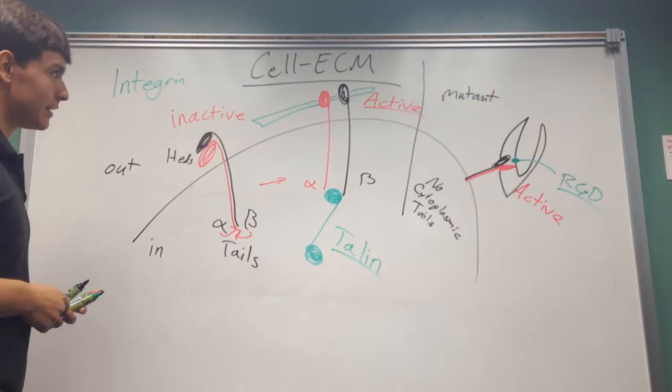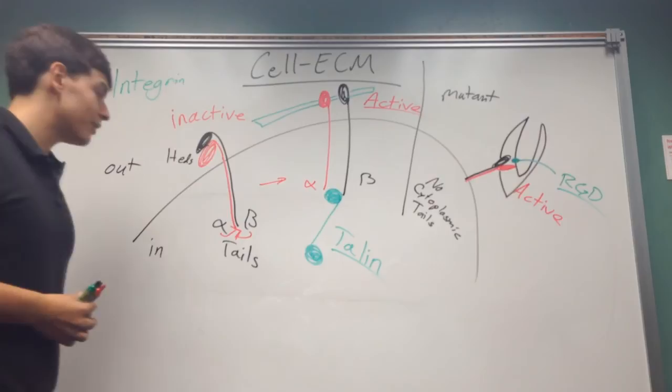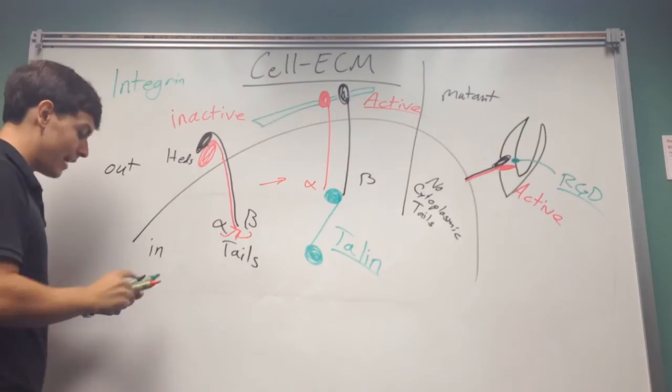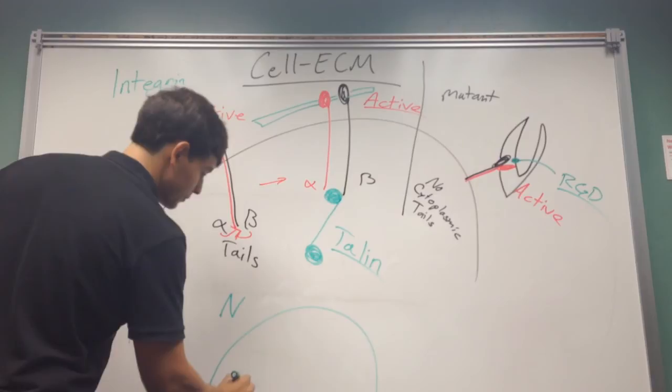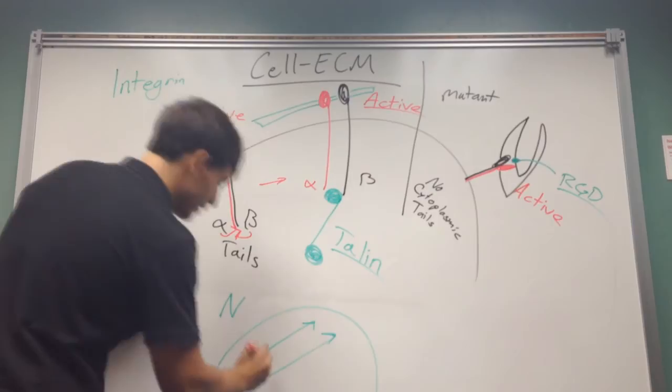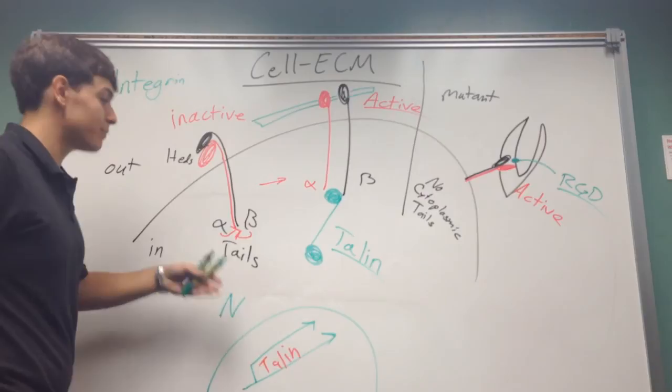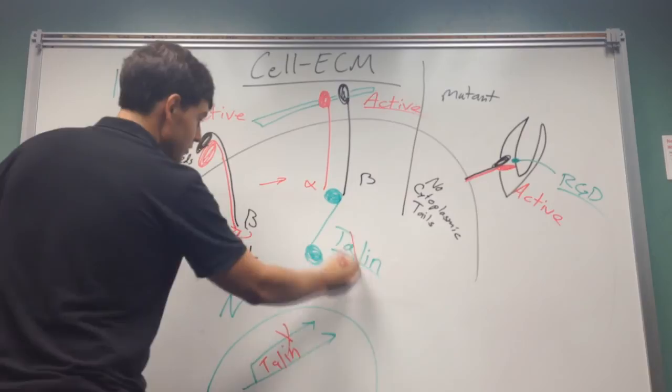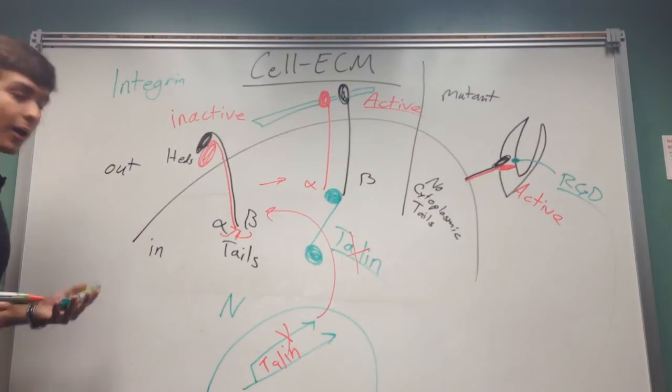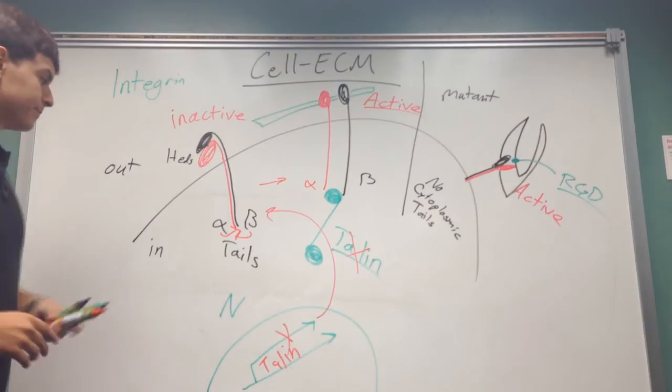And that's how integrins generally work. So, how you can regulate it is how the alpha and beta tails interact, but also you can regulate it by talin. Because talin, just like anything, when you look in the nucleus here, and we have some part of the gene for talin, you can up-regulate or regulate this whole process by affecting the transcription and translation and expression of talin. So, you can cancel this out to lead to no talin and basically lead to an inactive form. Or, the opposite, you can up-regulate it and lead to an always active form of integrin. And that's how the cell can connect and work with all this.